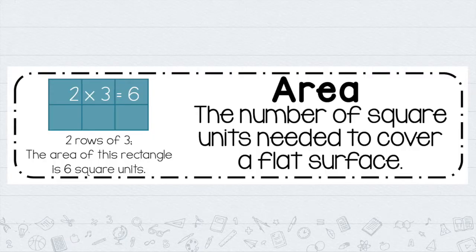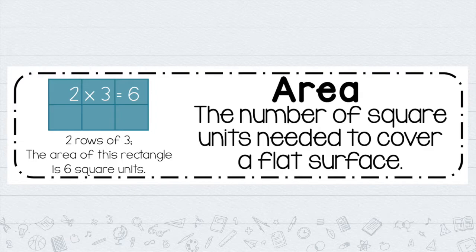So now let's talk about the second word: area. The area is the number of square units needed to cover a flat surface — it's actually the amount of square units that I have inside a shape. To find the area, I have to use a different operation. Instead of adding, I'm going to use multiplication.